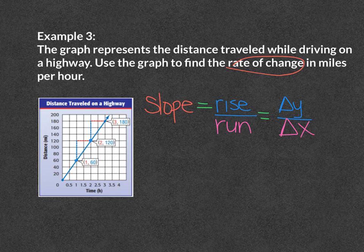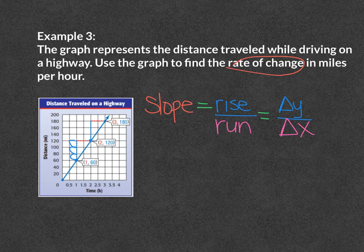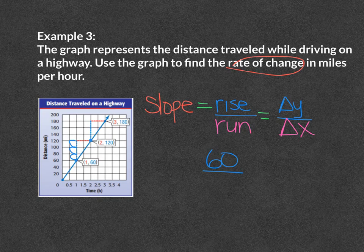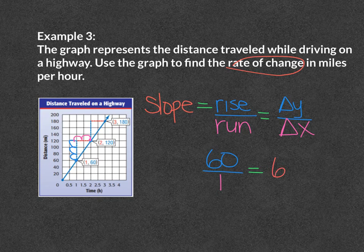I notice that on my y values I am going up by 20. So starting from the bottom point and going up: 20, 40, 60. So my change in y is 60. Now my change in x — I notice that I am going up by half each time I jump. Starting where I left off: one half, then 1. So my change in x is 1. That means 60 divided by 1 gives me 60, and that would be miles per hour. So my rate of change is 60 miles per hour.